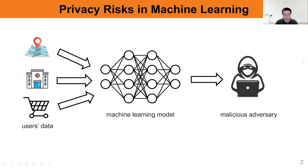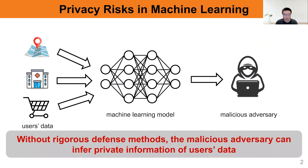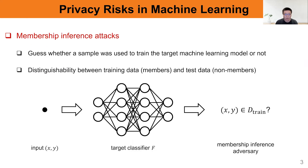Machine learning models are usually trained on users' data. A lot of recent works have shown that without rigorous defense methods, a motivated adversary can infer private information of users' data. In our work, we focus on membership inference attacks, where the adversary aims to guess whether the input sample is from the target classifier's training set or not.